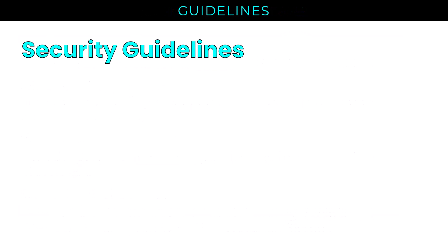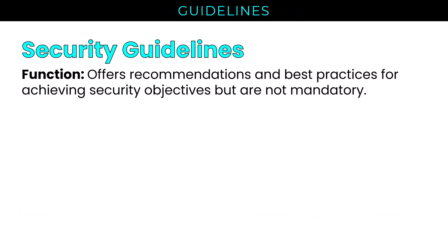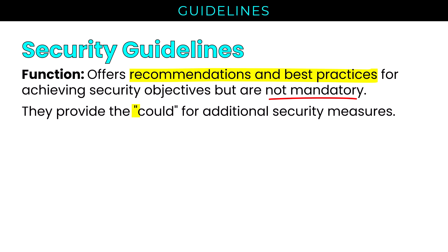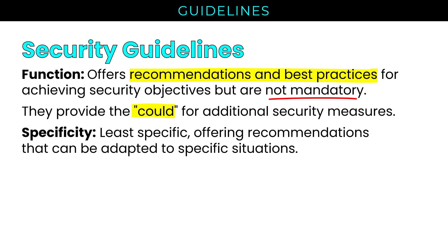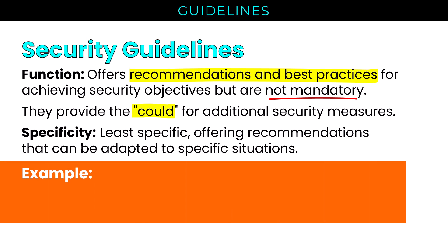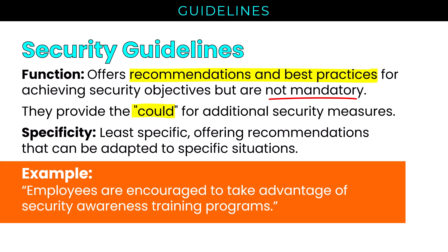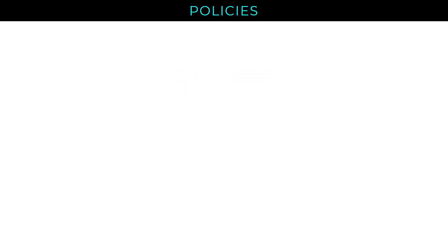Beginning with security guidelines. The function of a security guideline is to offer recommendations and best practices for achieving security objectives, but they are not mandatory. They provide the 'could' for additional security measures — what could we do to improve our security posture? They tend to be the least specific, offering recommendations that can be adapted to specific situations. For example, employees are encouraged to take advantage of security awareness training programs — a gentle nudging of sorts.